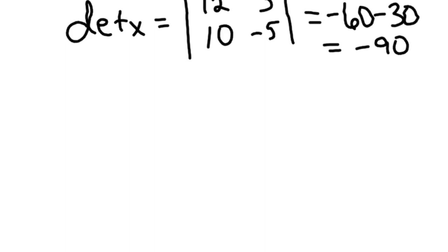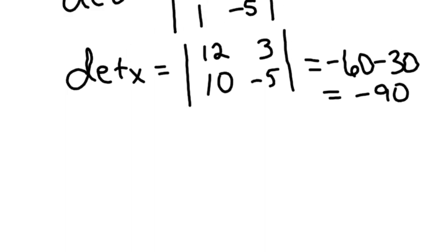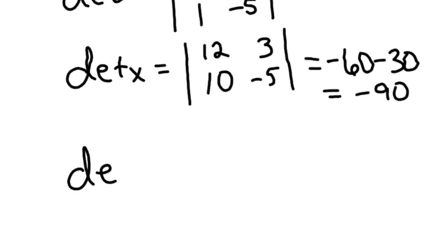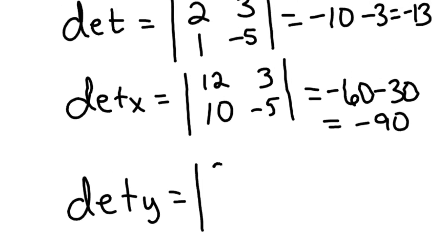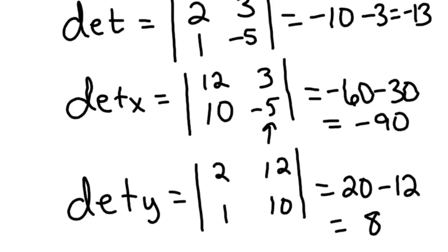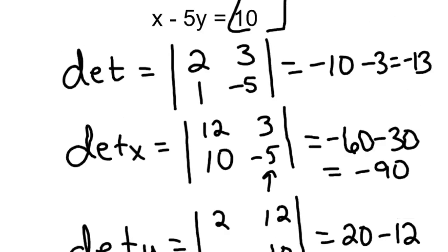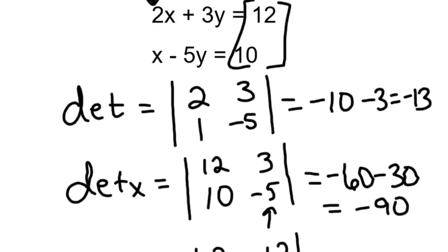The determinant of Y, then, is to do that same thing with the 12 and the 10, but put it in place of the Y. So determinant of Y would be, 2, 1 will stay the same, but now instead of this 3, negative 5, we'll put the 12, 10 in there. If you find the determinant of that, that would be 20 minus 12, which is 8. And so there's my three determinants: determinant of X, determinant of Y, and a main determinant.